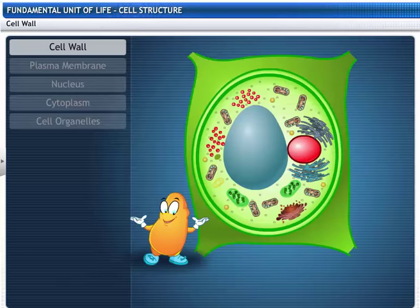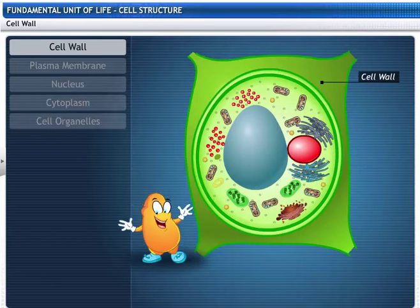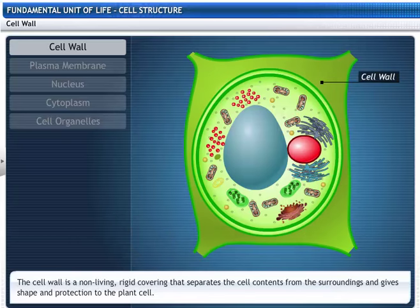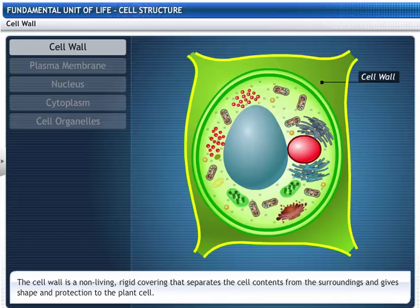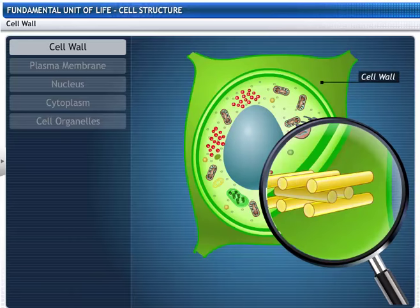Look at the cell. Notice the cell wall. The cell wall is the outermost covering which is non-living and rigid. It is seen only in a plant cell. It separates the cell contents from the surroundings and gives shape and protection to the cell. It is composed of cellulose and is permeable.